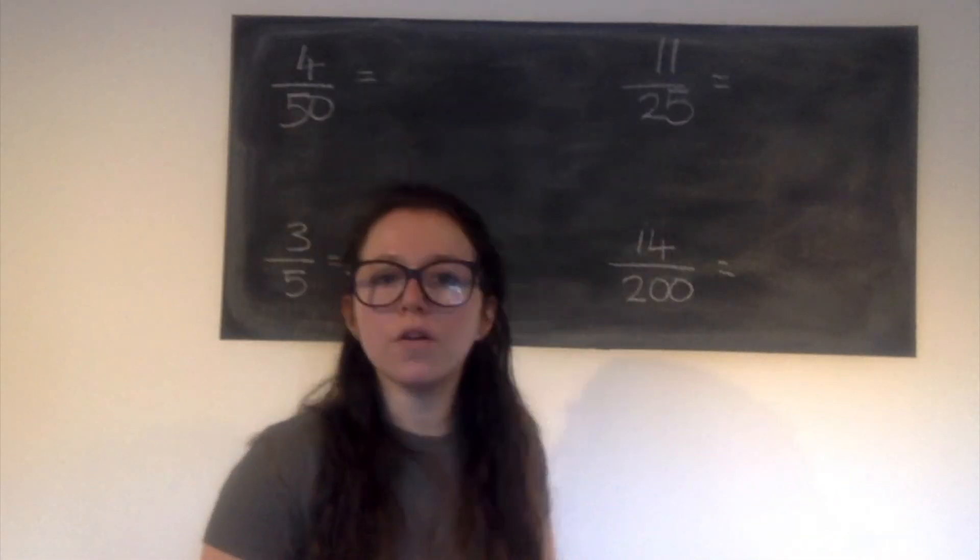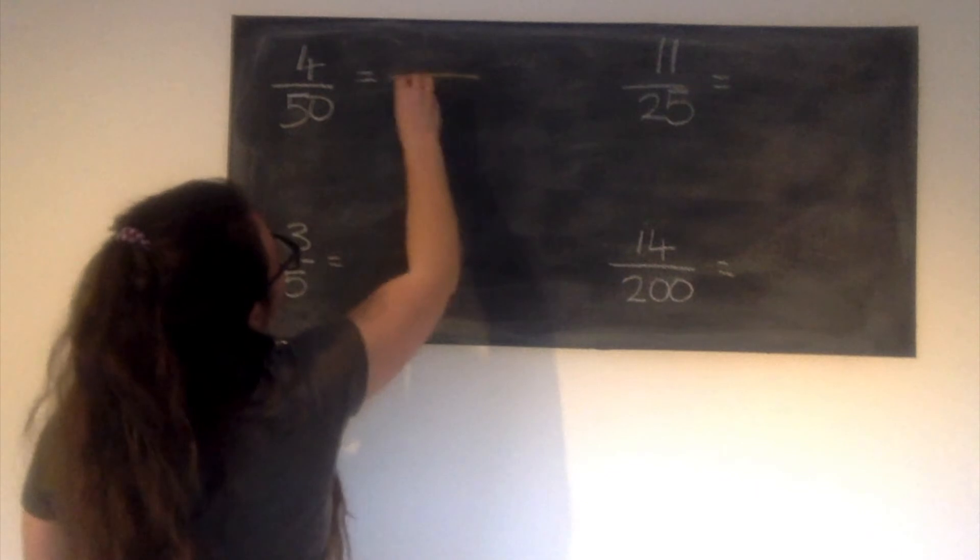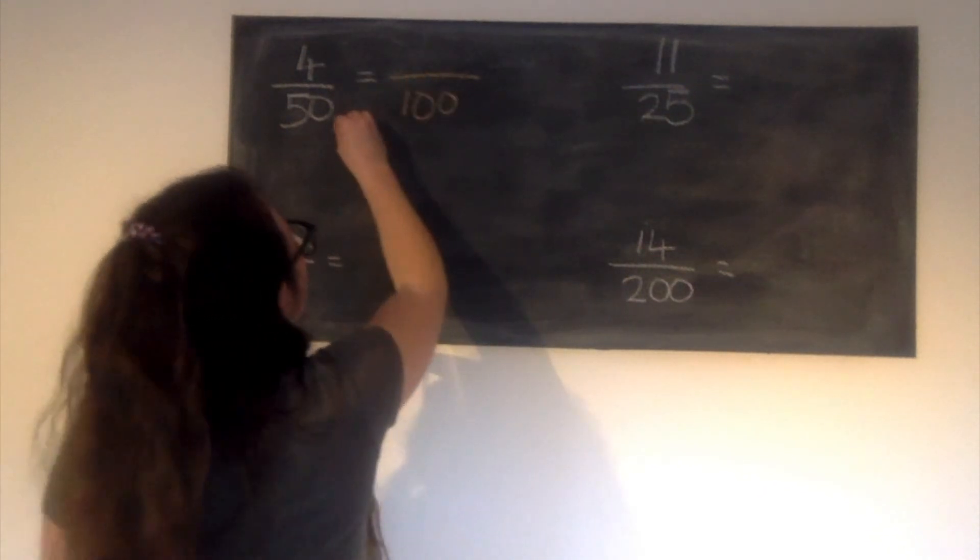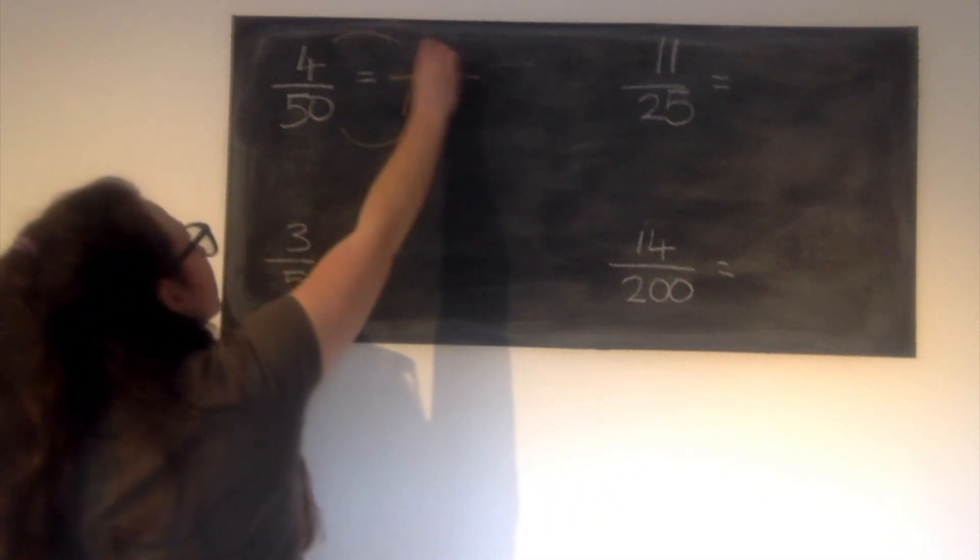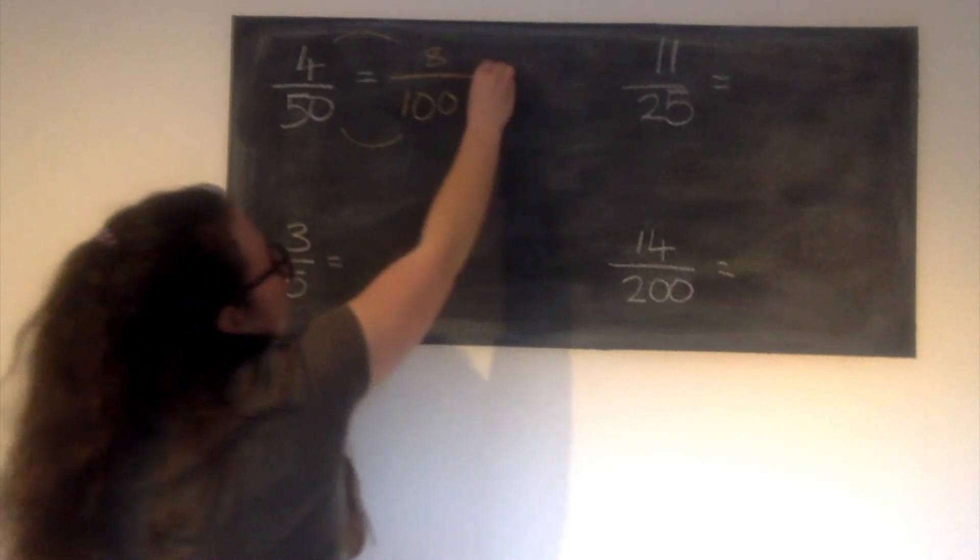Let's start off with 4 fiftieths. 4 fiftieths. Equivalent fraction into hundredths. I'll turn the bottom by 2. I must do the same to the top. It gives me 8, which is 8%.